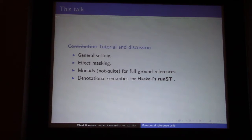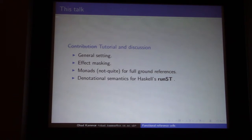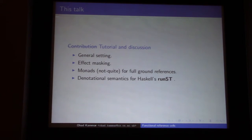What I'm going to do instead today is give a mini tutorial about how these kinds of models are constructed — what I call the general setting. Then I'll talk about effect masking, which I think is a crucial property for doing the RunST soundness proof. Then I'm going to talk about the monads that me and Sean have looked at, but tell you why they're not quite the right monads for full ground references. Then I'll talk about the soundness of RunST. It's going to be a bit of a short talk, so feel free to interrupt and interact.